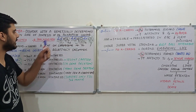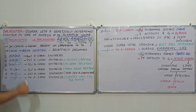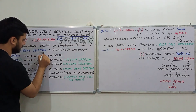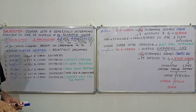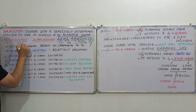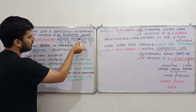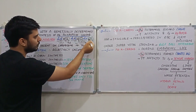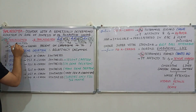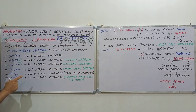We will discuss alpha thalassemia today and beta thalassemia in our next lecture. The cause of alpha thalassemia is gene deletion, which leads to reduced alpha chain synthesis. Normally, there are two alpha chains per hemoglobin molecule — in adult HbA we have alpha-2 beta-2, in HbA2 alpha-2 delta-2, and in fetal HbF alpha-2 gamma-2. For the synthesis of these two alpha chains, four genes are required.